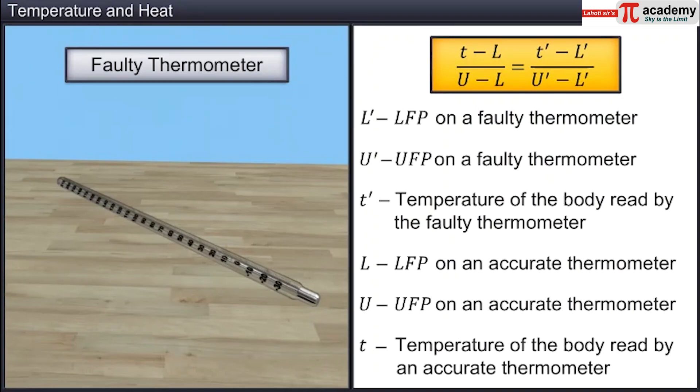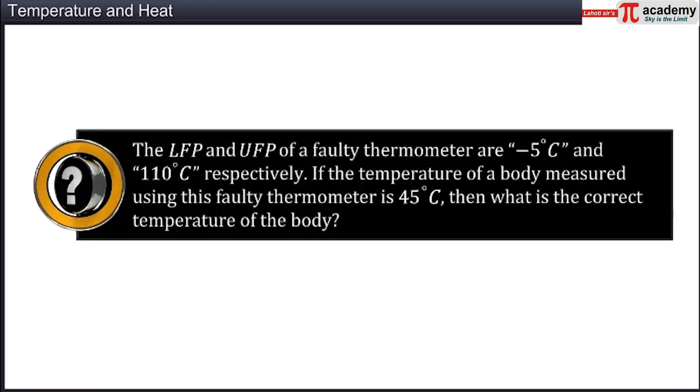then the correct temperature of the body is found using the expression. Let's solve a problem based on this formula. The LFP and UFP of a faulty thermometer are minus 5 degrees Celsius and 110 degrees Celsius respectively. If the temperature of a body measured using this faulty thermometer is 45 degrees Celsius, then what is the correct temperature of the body?